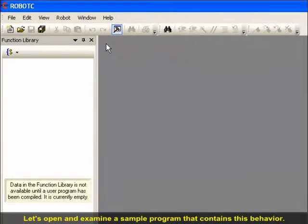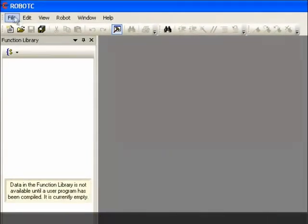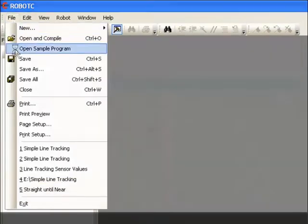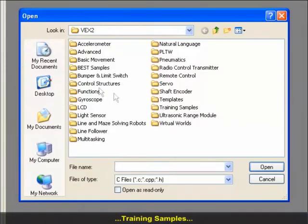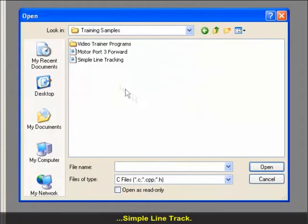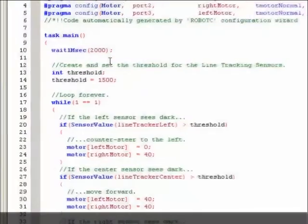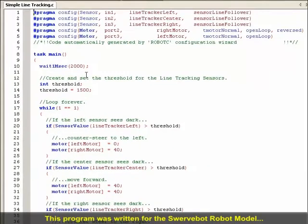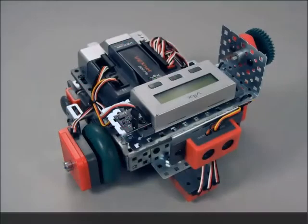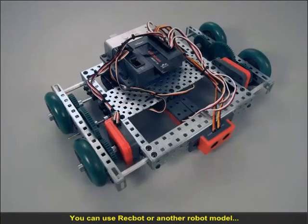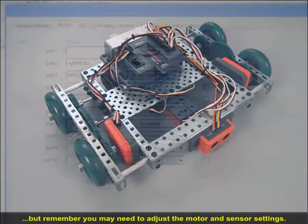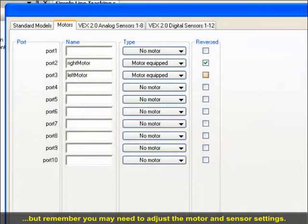Let's open and examine a sample program that contains this behavior. Go to File, Open Sample Program, Training Samples, Simple Line Tracking. This program was written for the SwerveBot robot model. You can use RecBot or another robot model, but remember that you may need to adjust the motor and sensor settings.